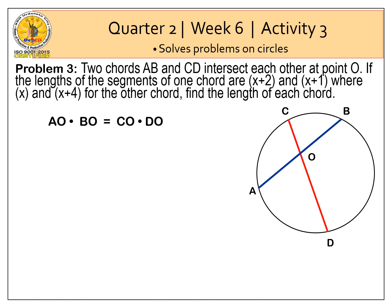So we are going to use the chord product theorem. Then we have this equation. AO times BO is equal to CO times DO. So substituting the values to our equation, we have X plus 2 times X plus 1 equal to X times X plus 4. Find the product of both sides. We have X squared plus 3X plus 2 equal to X squared plus 4X.